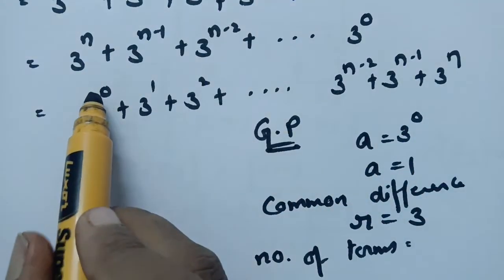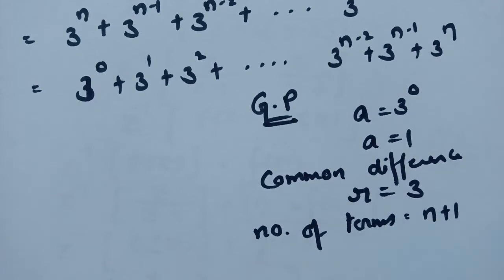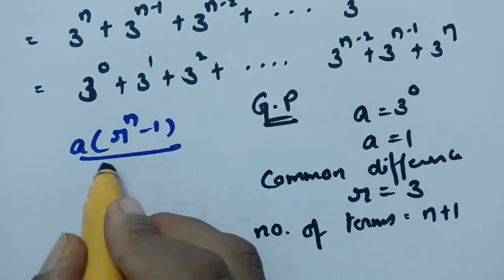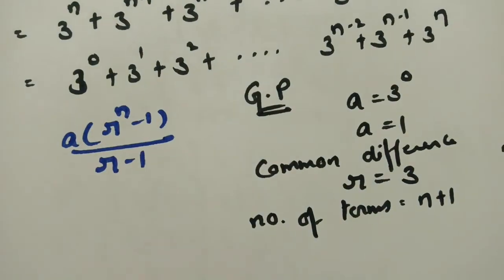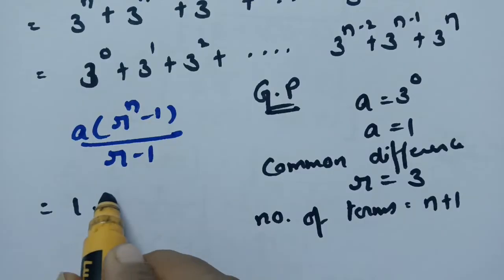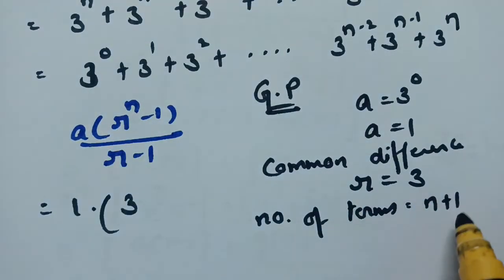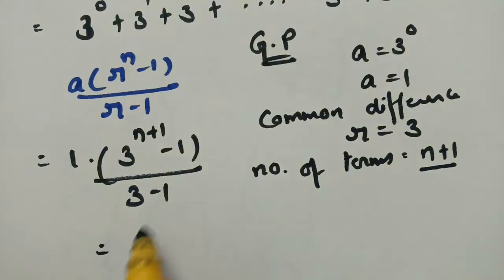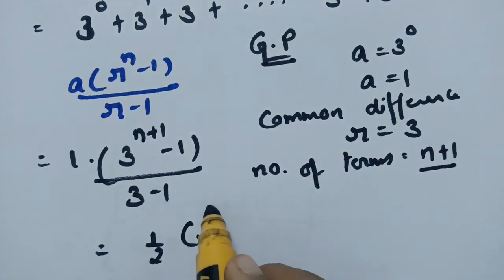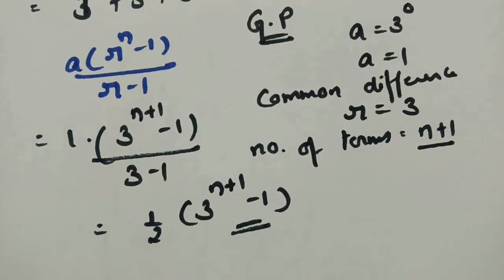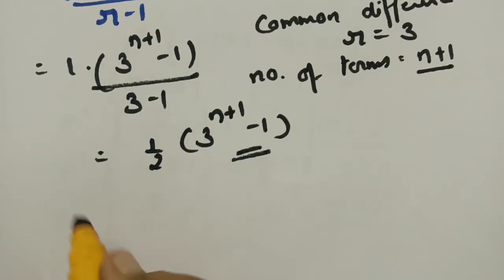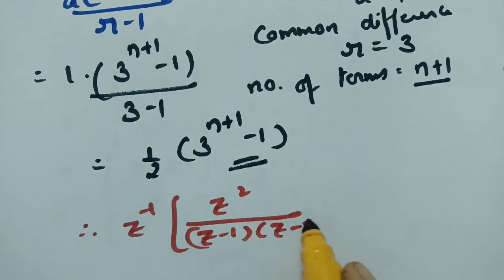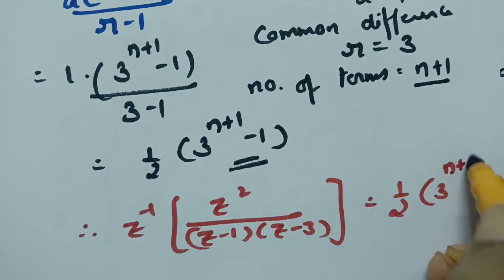There are n+1 terms. According to the geometric progression sum formula: S = a·(rⁿ − 1)/(r − 1). Substituting a=1, r=3, and n+1 terms gives 1·(3^(n+1) − 1)/(3−1) = (3^(n+1) − 1)/2. Therefore, the inverse Z-transform of z²/[(z−1)(z−3)] = ½(3^(n+1) − 1).